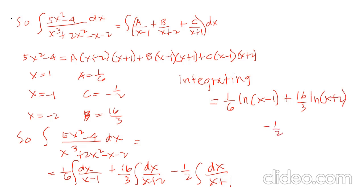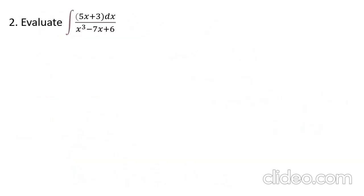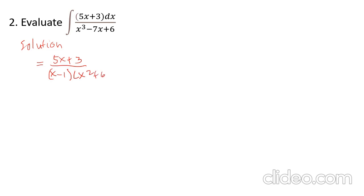Next example: evaluate the integral of (5x + 3) dx over (x³ - 7x + 6). The denominator x³ - 7x + 6 can be factored. Using the factor theorem, 5x + 3 over (x - 1)(x² + x - 6).